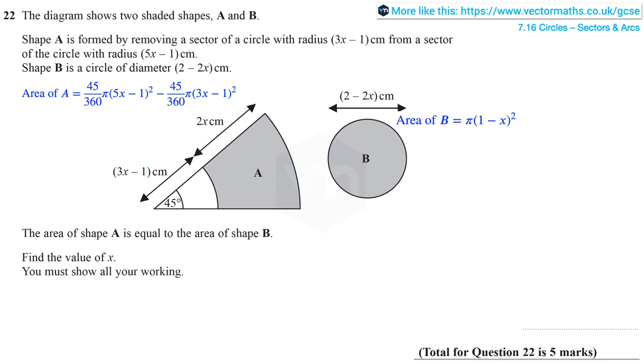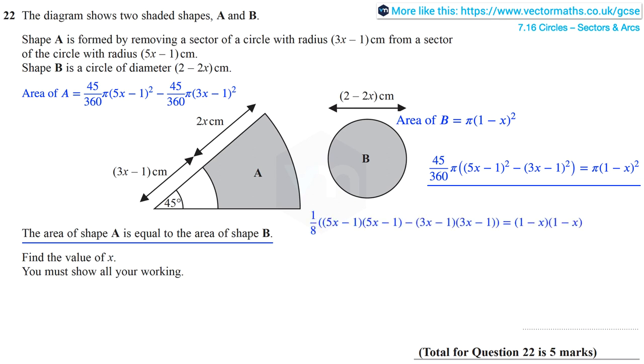Now since the area of shape A is equal to the area of shape B, we can equate these expressions. And remember that 45 over 360 simplifies to one-eighth. Now there is a considerable amount of expanding and simplifying to do here.